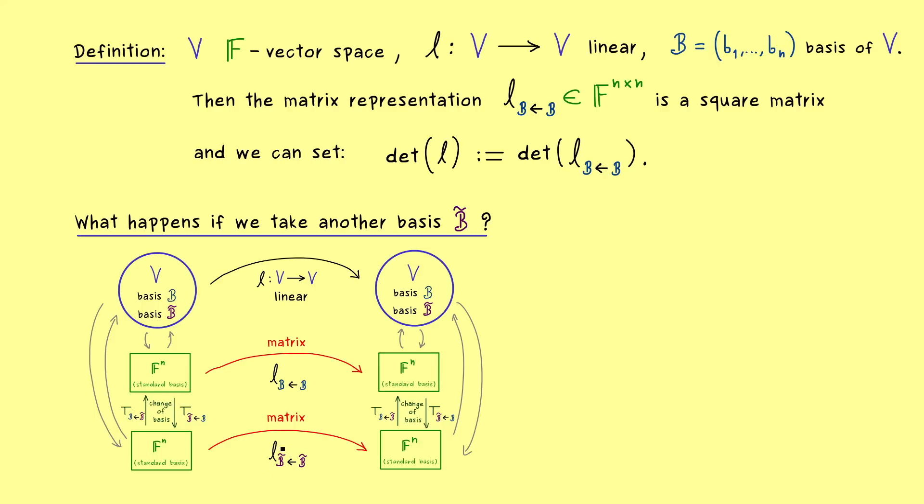So we already know, these matrices could be different, but they are connected by a change of basis matrix. More precisely, we have a composition or a matrix product that satisfies this equation here. And moreover, if we exchange the basis entries here on the right hand side, we get the inverse of this change of basis matrix.